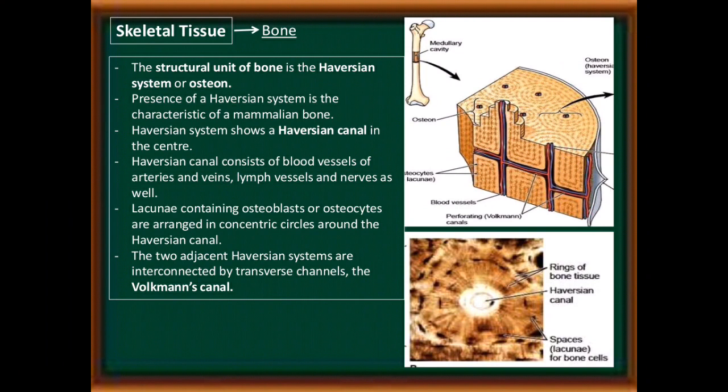The structural unit of bone is the Haversian system, or osteon. The presence of a Haversian system is characteristic of mammalian bone. The Haversian system shows a Haversian canal at the center, which consists of blood vessels (arteries and veins), lymph vessels, and nerves. Lacunae containing osteoblasts or osteocytes are arranged in concentric circles around the Haversian canal. The two adjacent Haversian systems are interconnected by transverse channels called Volkmann's canals.